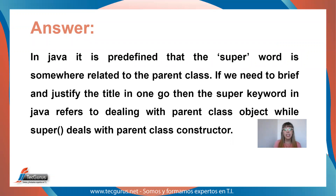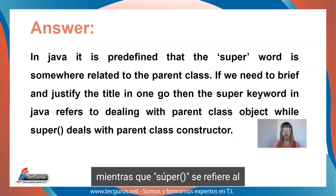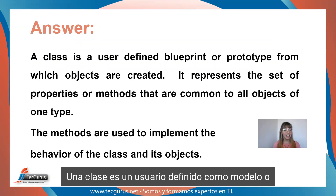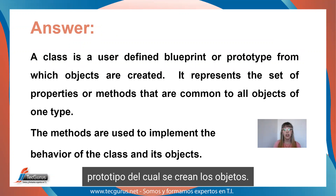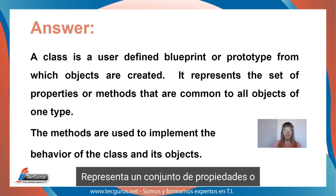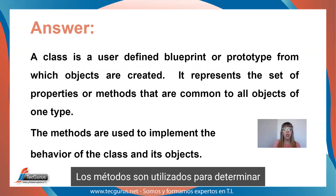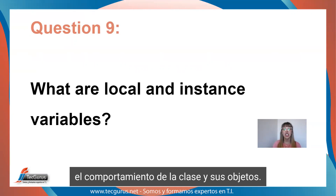Question eight. What is a class in Java? A class is a user-defined blueprint or prototype from which objects are created. It represents the set of properties or methods that are common to all objects of one type. The methods are used to implement the behavior of the class and its objects.